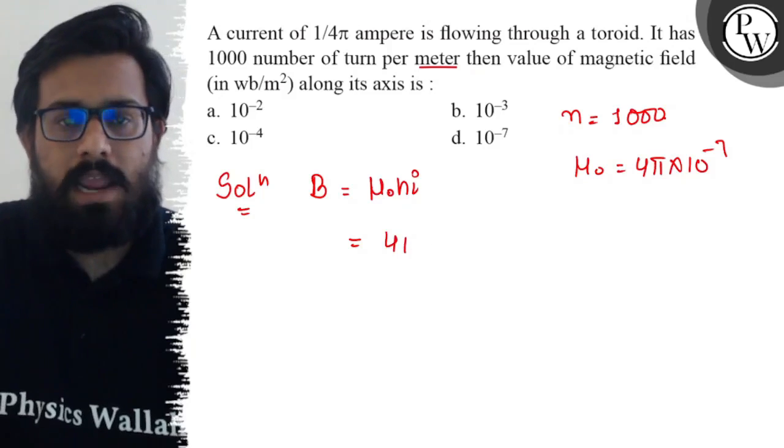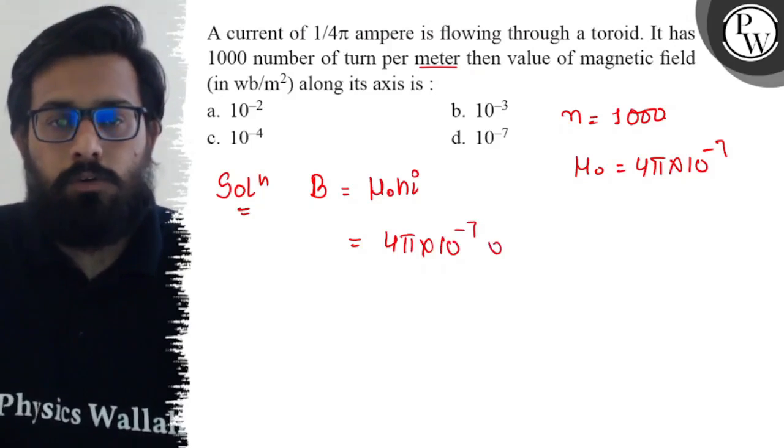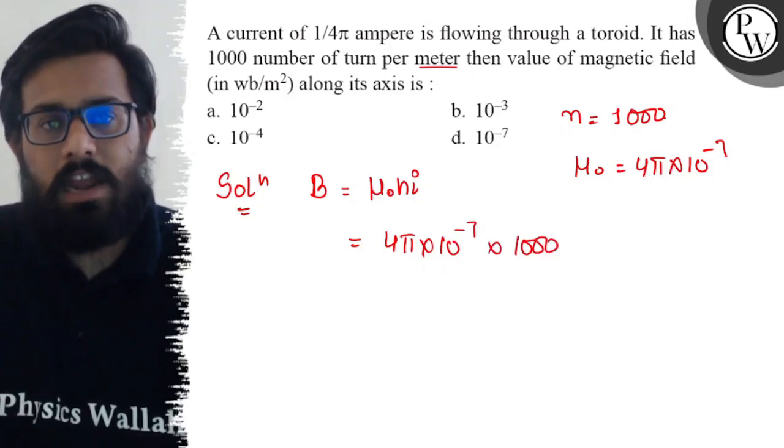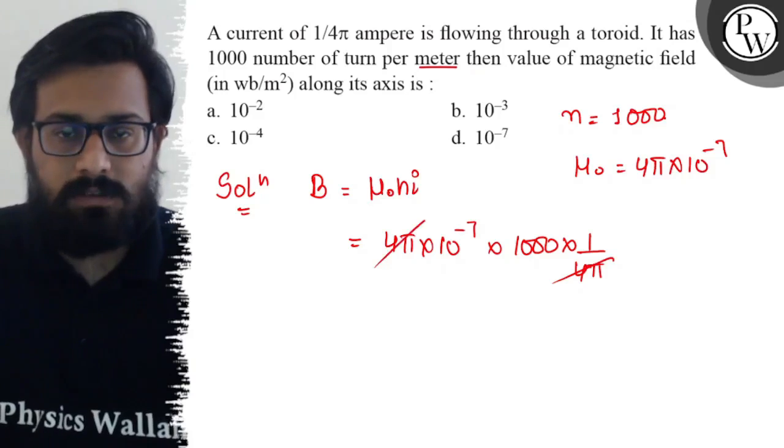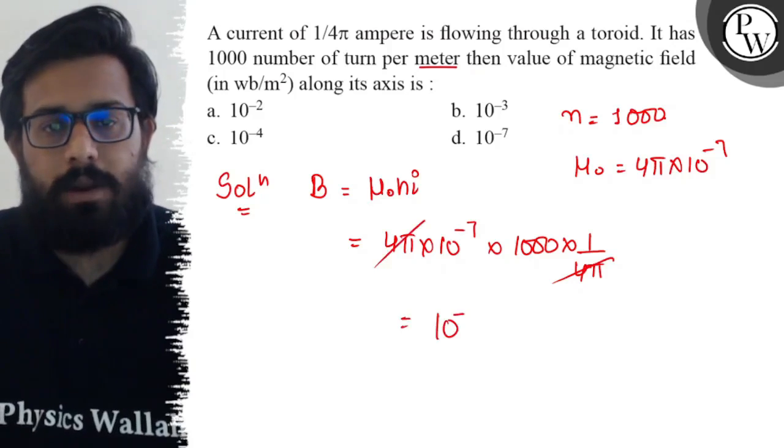4π × 10^-7 into 1000 and the value of current is 1 upon 4π. 4π to 4π cancel out and it comes out with 10 raised to power minus 4.